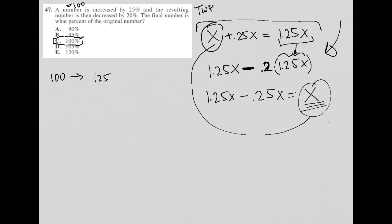So if 100 is increased by 25%, that 100 is going to become 125. And then it says, and the resulting number is then decreased by 20%. Well, that 20% decrease of 125, we already found out, is 25. So subtract 25. Now I'm back down to 100.